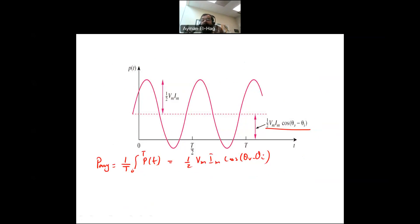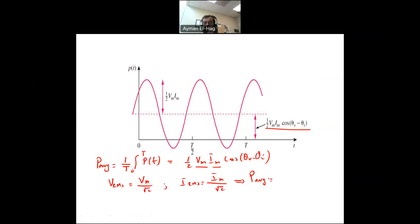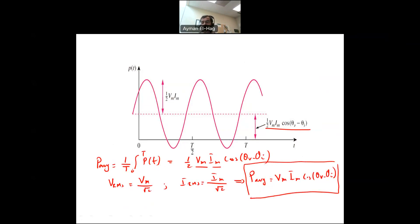In power systems we use RMS values rather than peak values. Since V_rms = V_m / sqrt(2) and I_rms = I_m / sqrt(2), the final formula becomes P_avg = V_rms × I_rms × cosine(theta_V − theta_I). In a single-phase circuit, the power has a time-varying term and a constant term, and we are primarily interested in the average constant value.